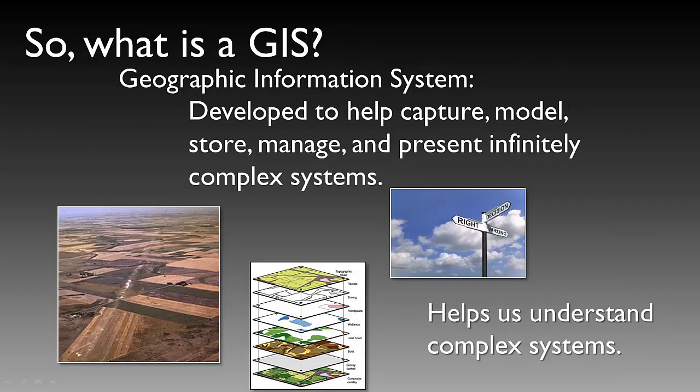GIS is an amazing tool that can do incredible analysis — but what is it? Geographic information systems have been around for the better part of 30 years, generally developed by the Environmental Systems Research Institute, or ESRI. GIS was developed to help capture, model, store, manage, and present very complex systems. It does this by allowing us to break up the landscape into multiple layers so we can better understand relationships between them — including parcels, zoning, floodplains, watersheds, land cover, soils, topography, and more. By pulling that data apart and mixing it back together, we can tease out relationships and break down complex systems.